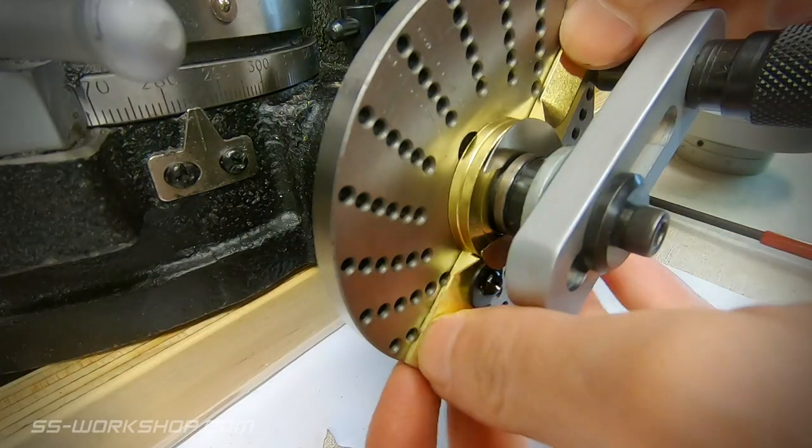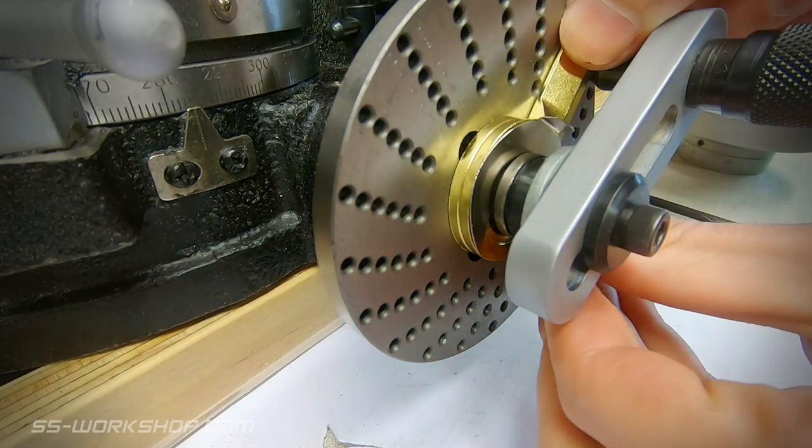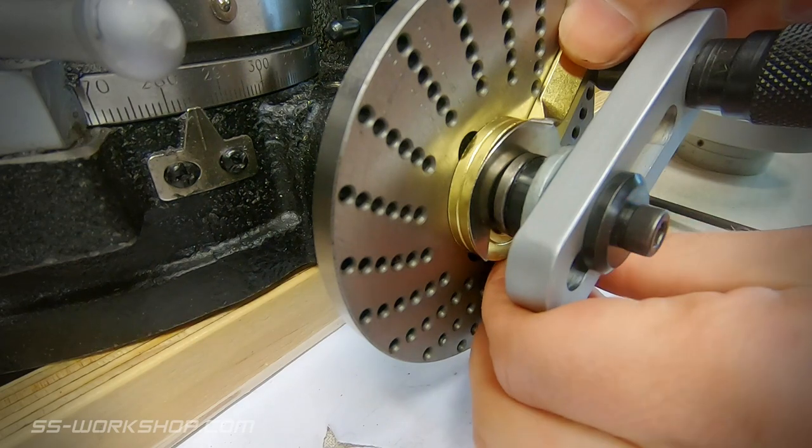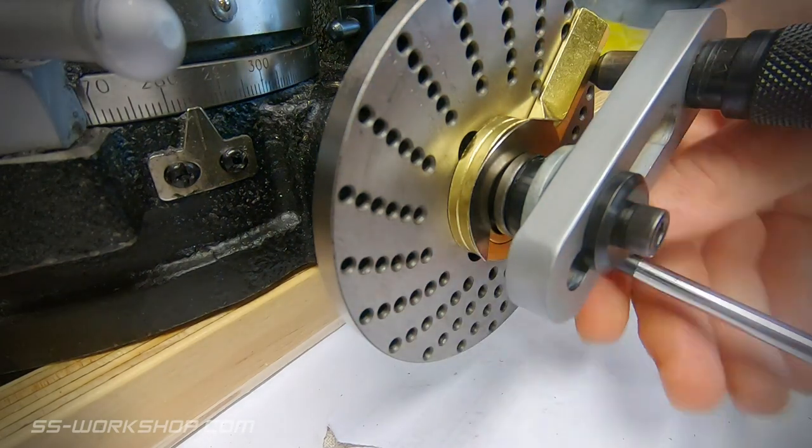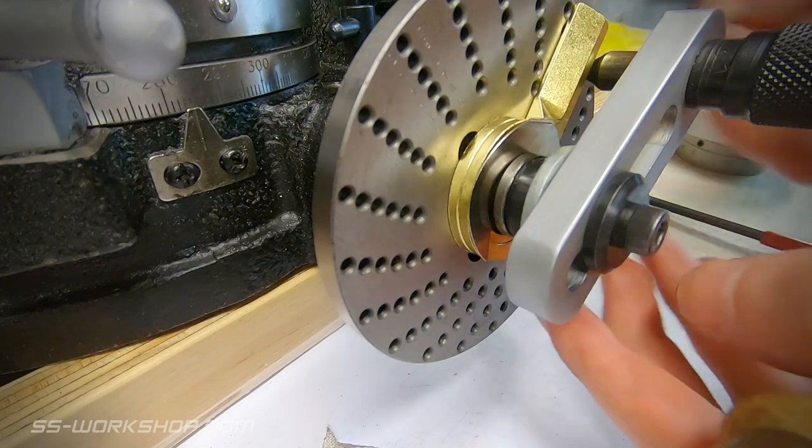Now we can set up the selector arms. For my setup I need 14 holes so I count out the 14 holes on the second row and then I can tighten the screw to lock it in place.